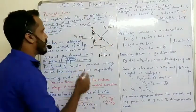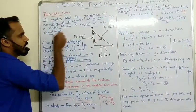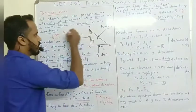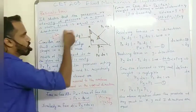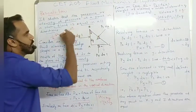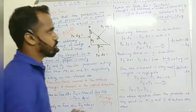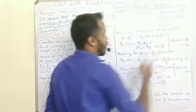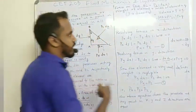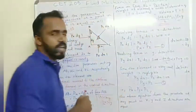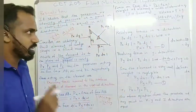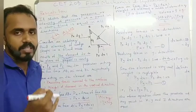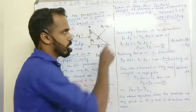The volume of this triangular element: the triangle area is half base times height, which is half bh. Here AC is b and AB is h, so the area is AC into AB divided by 2. The volume is AC into AB divided by 2 into 1 (unit width). Rho into g gives the weight.